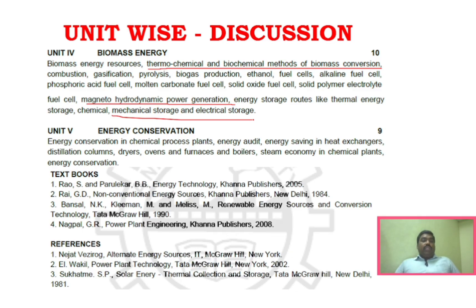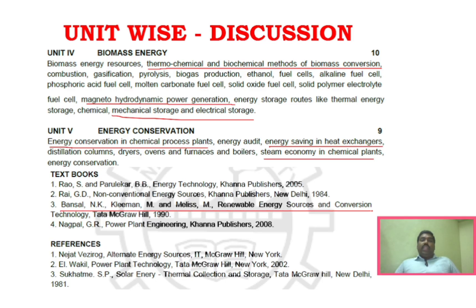Unit 5 covers energy conservation in chemical process plants, steam economy in chemical plants, and energy saving in heat exchangers — these are the key areas. For the textbook, there is a downloadable link you can use. Use the same types of diagrams and side ratings from the book so that you can score more marks.